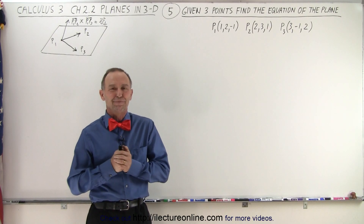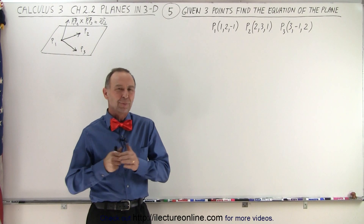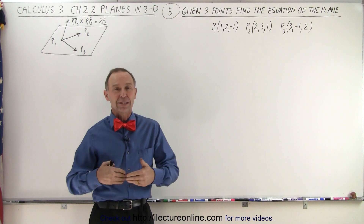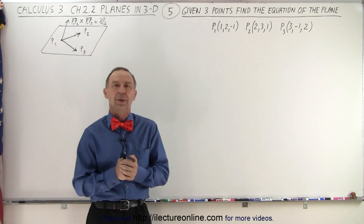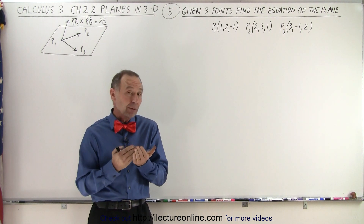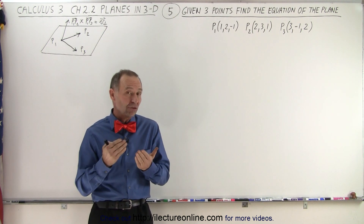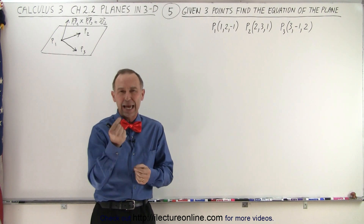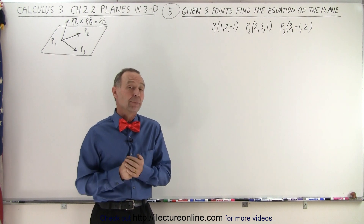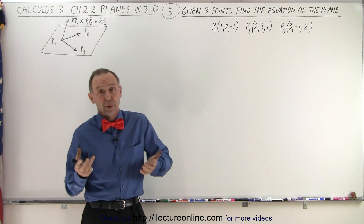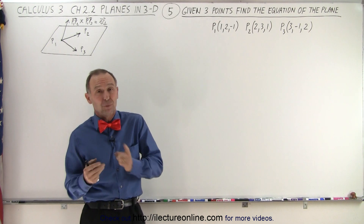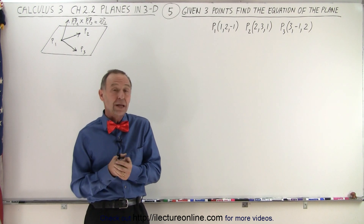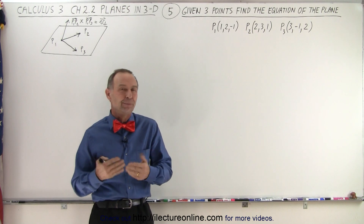Welcome to our lecture online. If we're given three points on the plane, how do we find the equation of the plane? We know that we can find the equation if we have the vector perpendicular to the plane and one point on the plane. So since they gave us three points, we already have one point on the plane, but now we need to determine how to find that perpendicular vector.